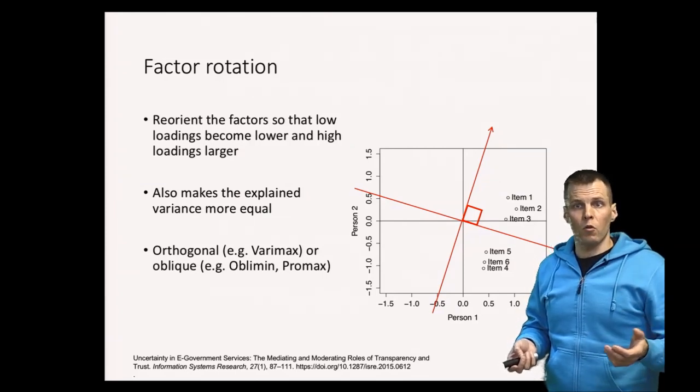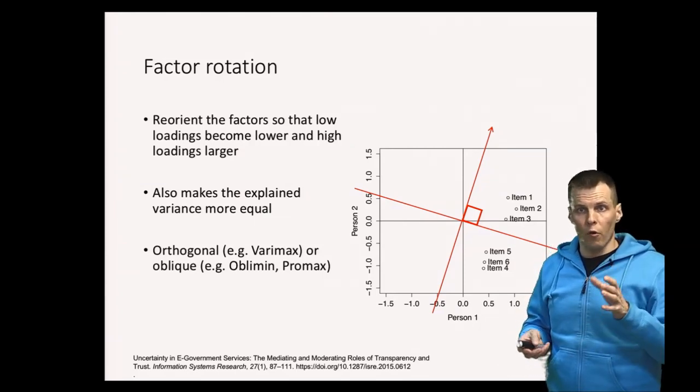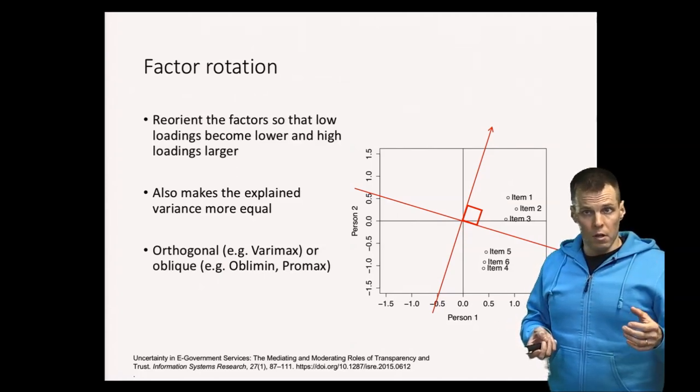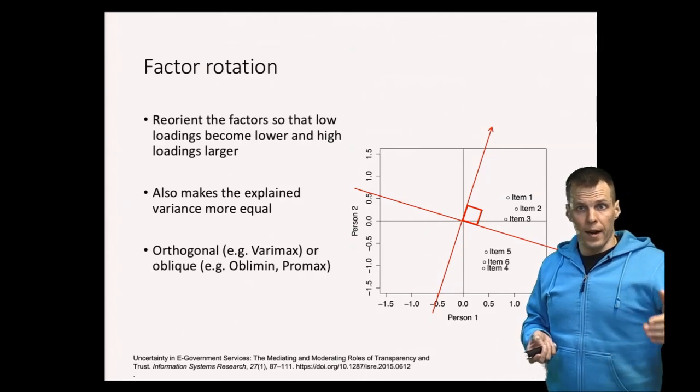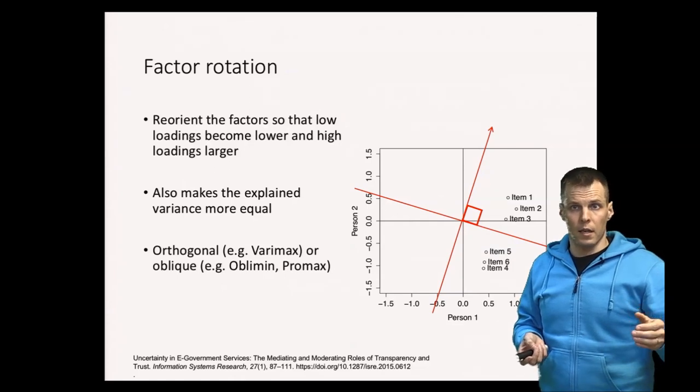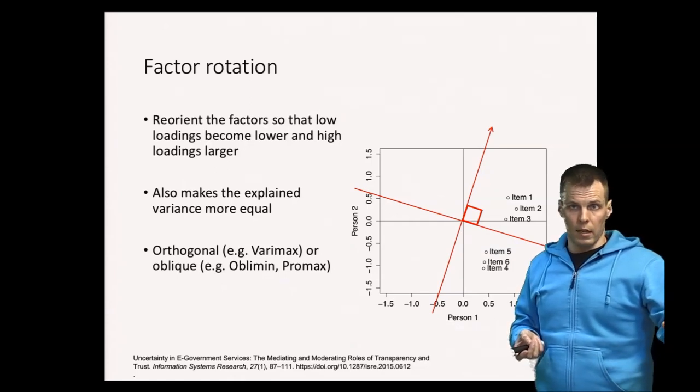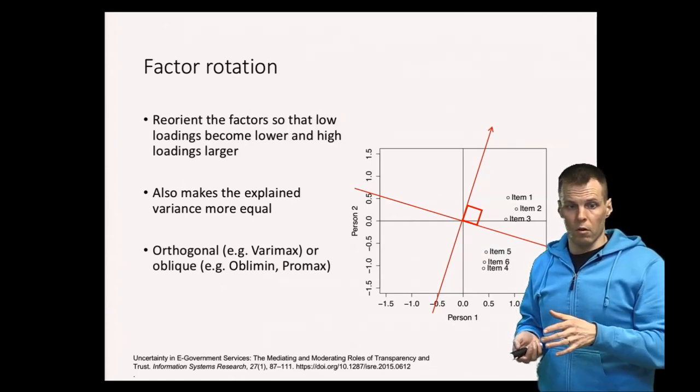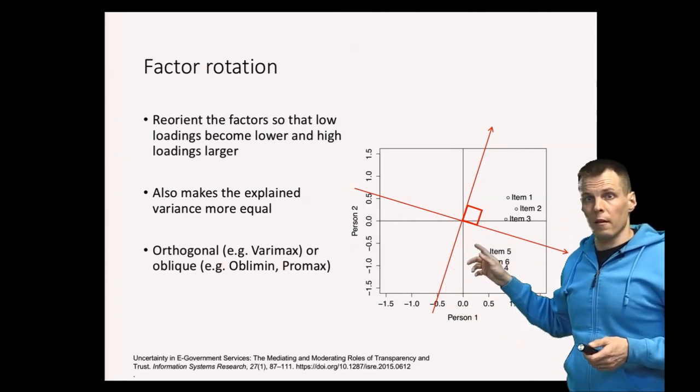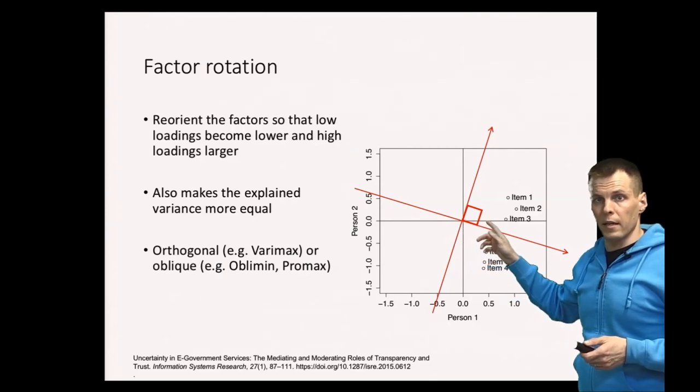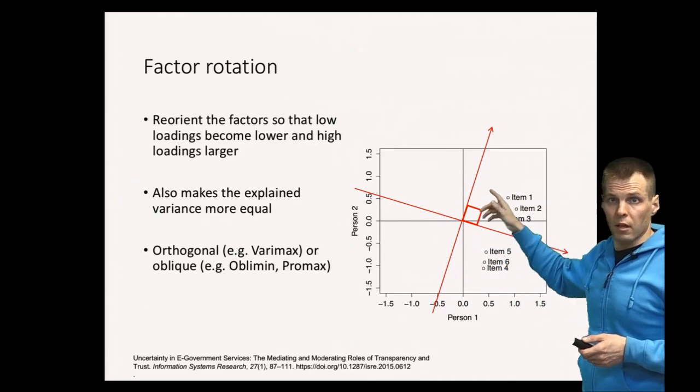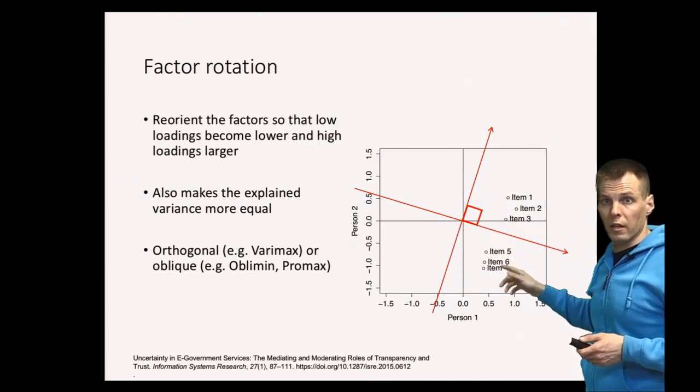The purpose of a factor rotation is that we try to reorient the factor analysis solution so that our indicators load highly on one factor and one factor only. So we try to maximize each indicator's largest factor loading and minimize all other factor loadings. It also makes the variances more equal. So here the second factor actually explains more variation than the first factor because all the indicators are in this direction.